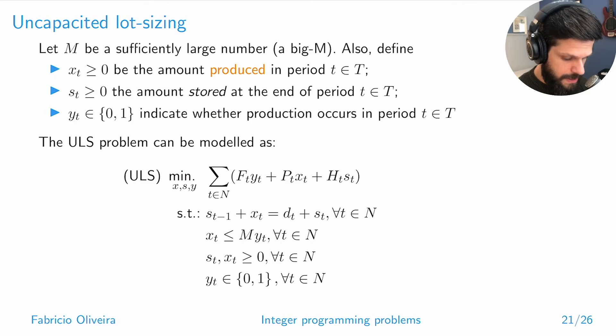Ideally, if this was a capacitated lot sizing problem, then instead of using this M here, this could simply be the capacity, the production capacity in period t, and it would work exactly the same. It would be x is less than or equal to capacity if the capacity is available, and x is less than or equal to zero if the capacity is not available. It would be exactly the same model with only this being replaced by the production capacity. It's very straightforward once we build the knowledge from the previous models.